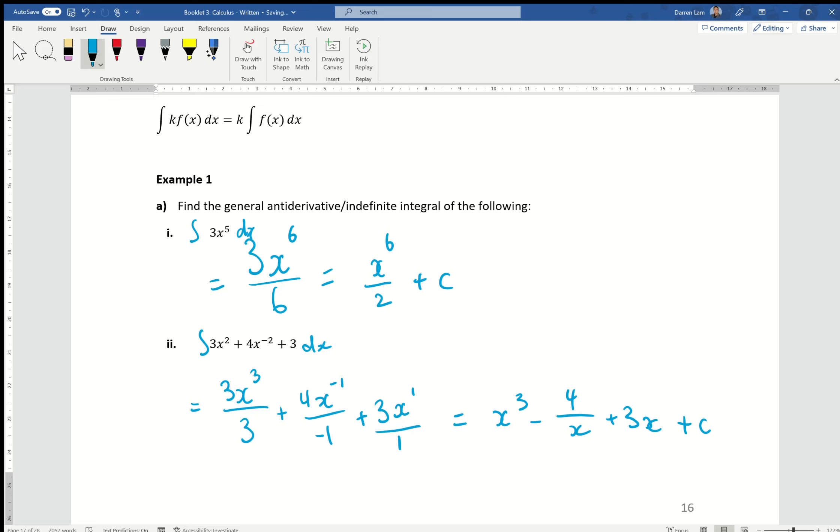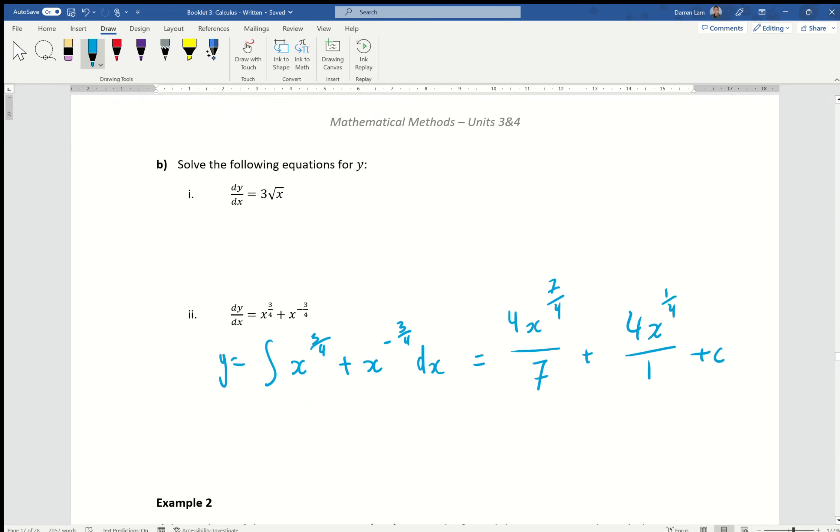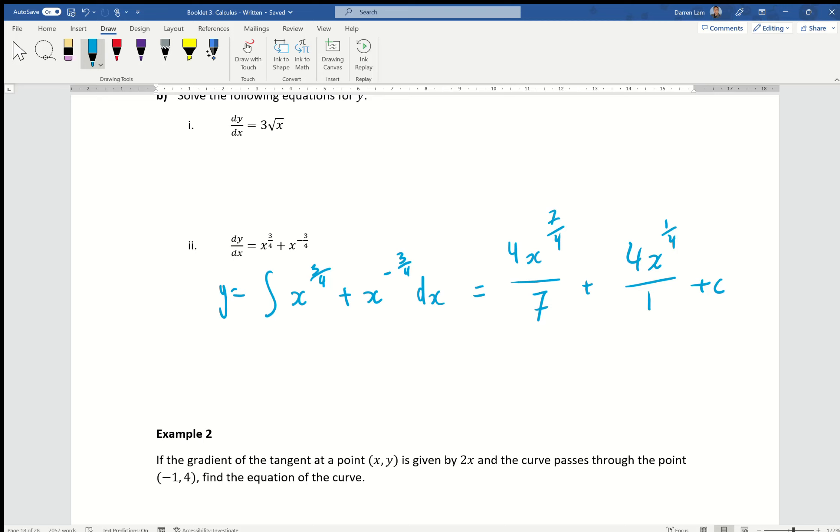General antiderivative, you must include your plus c's. If I ask for an example of an antiderivative, you don't need your plus c's. But in this case, general antiderivative always include your plus c's. Of course, this would simplify to 4 over 7 x power of 7 over 4 and then plus 4 x power of 1 over 4 plus c.